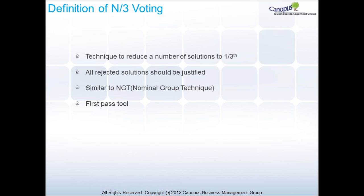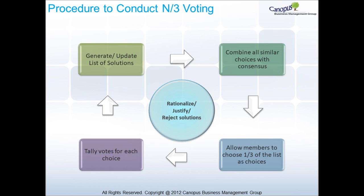This is an example of a first-pass tool. The procedure to conduct the N by 3 voting is like a cycle. First, we either generate or update the list of solutions that need to be filtered. Then, combine all similar choices of solutions with consensus.